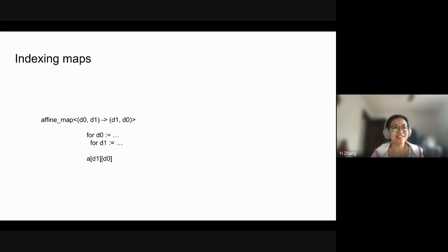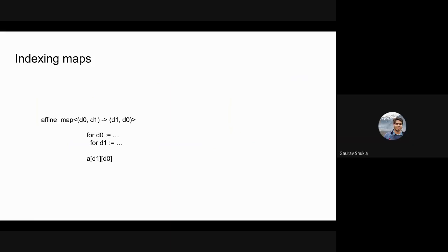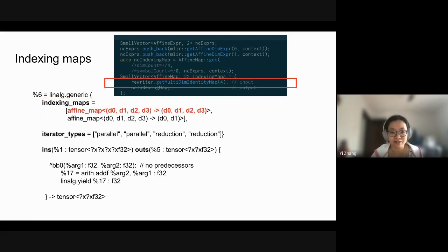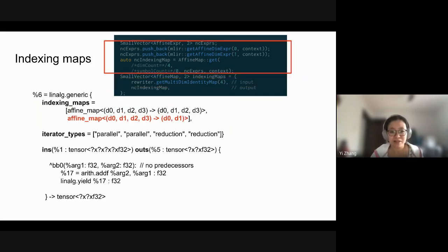Hopefully that makes sense and isn't too confusing. Here's the code snippet of what the affine map looks like in the code. For the first tensor it's very straightforward — the affine expressions are just using the induction variables directly. For the second indexing map, we need a few more steps.